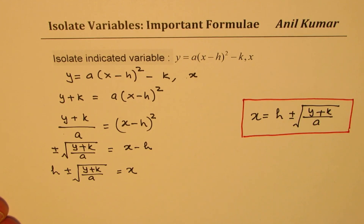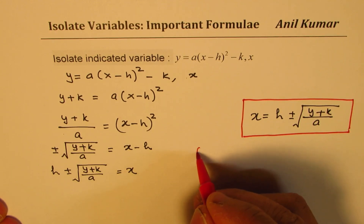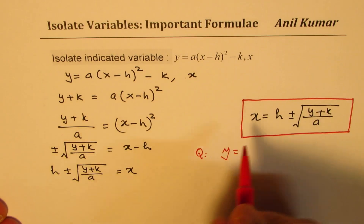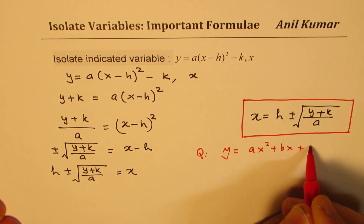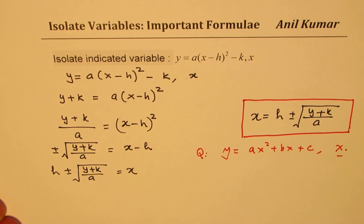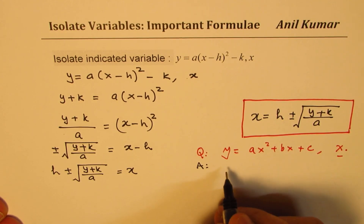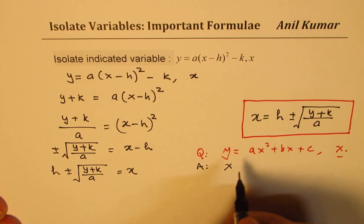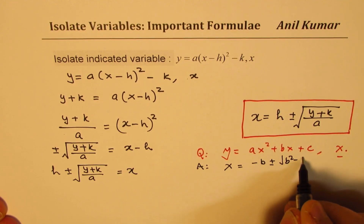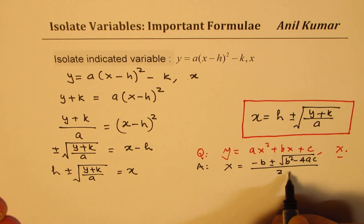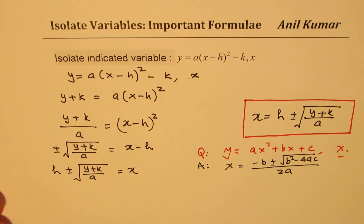So I hope the steps are absolutely clear. Now here is a test question: given the standard form ax squared plus bx plus c equals to 0, isolate x. The answer is the quadratic formula: x equals to minus b plus or minus square root of b squared minus 4ac over 2a. I want you to derive this formula. Feel free to write a comment, share your views, and if you like and subscribe to my videos that would be great. Thanks for watching and all the best.